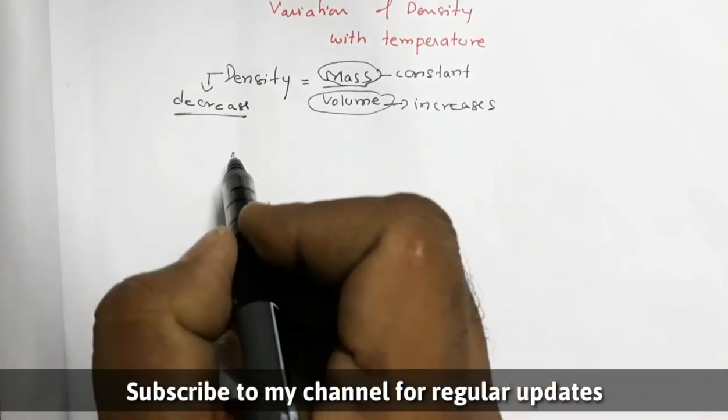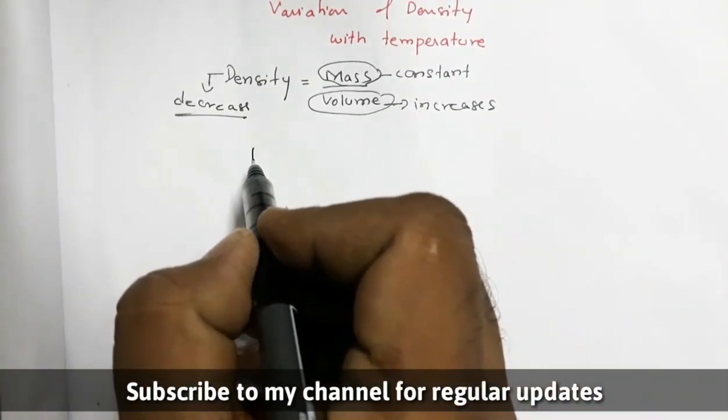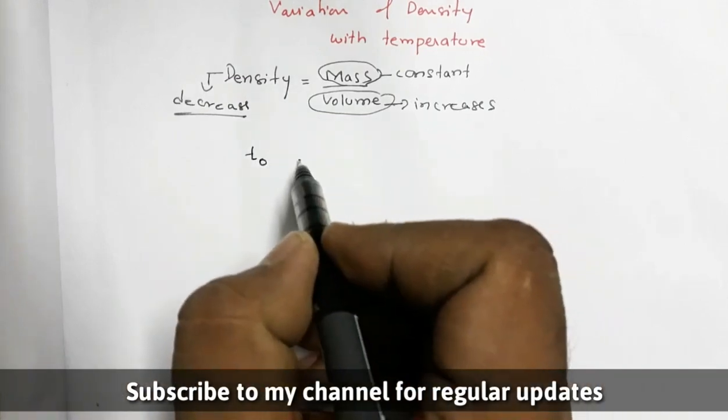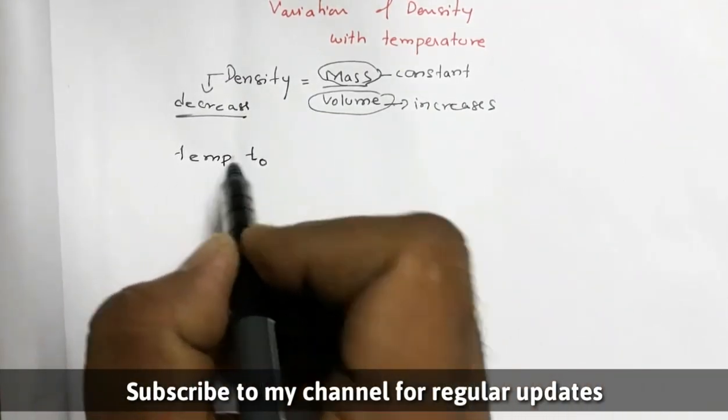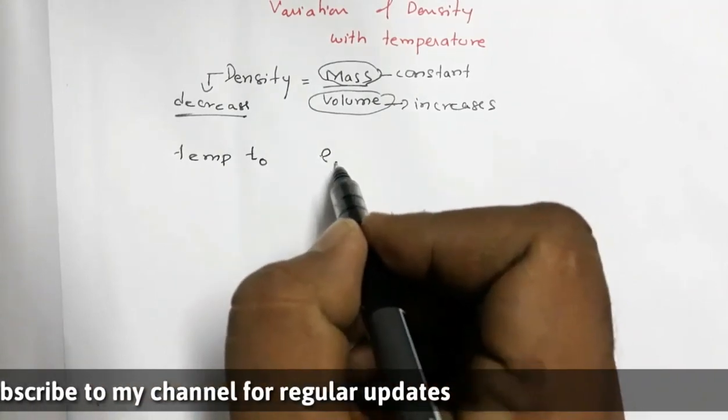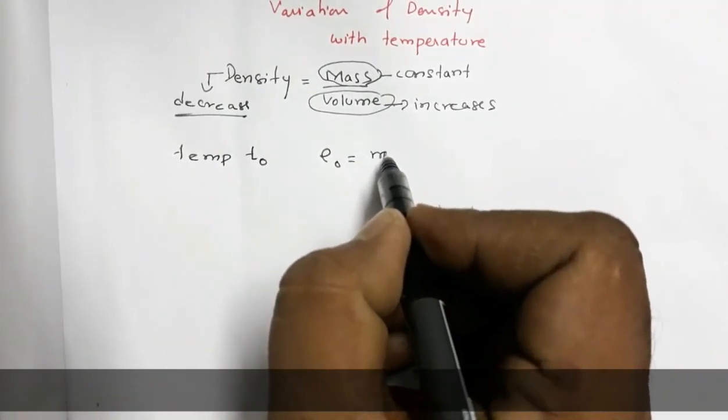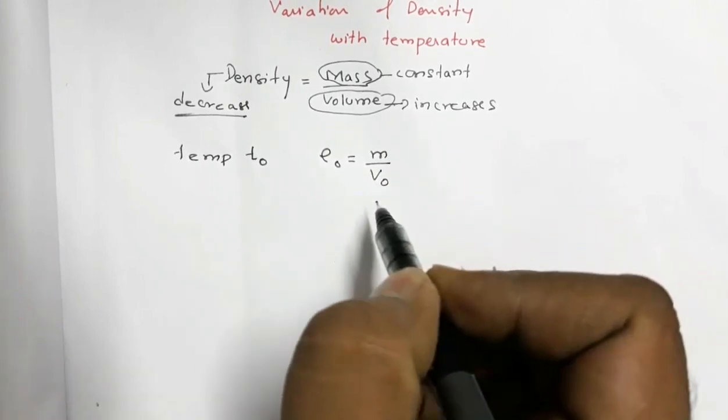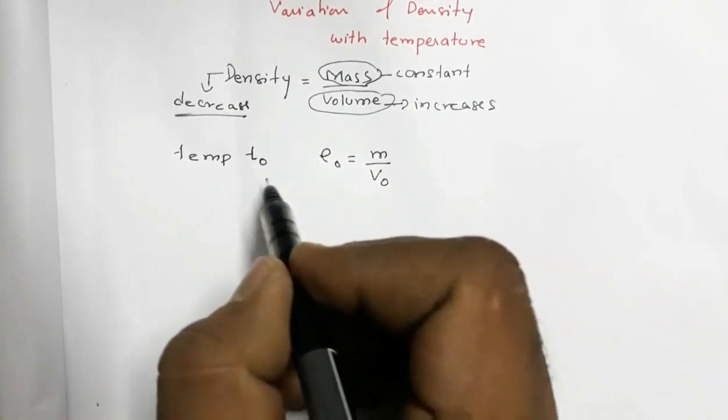Now let us say at temperature T0, the density is ρ0 is equal to M by V0. So V0 is the volume at temperature T0, ρ0 is the density at temperature T0.